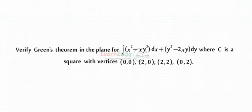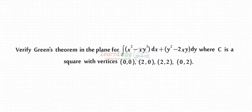Verify Green's Theorem in the plane for the closed integral of (x squared minus xy cubed) dx plus (y squared minus 2xy) dy, where C is a square with vertices (0,0), (2,0), (2,2), and (0,2).